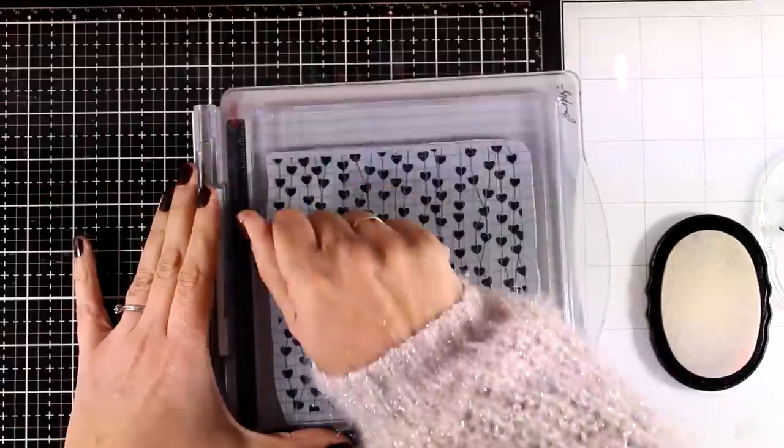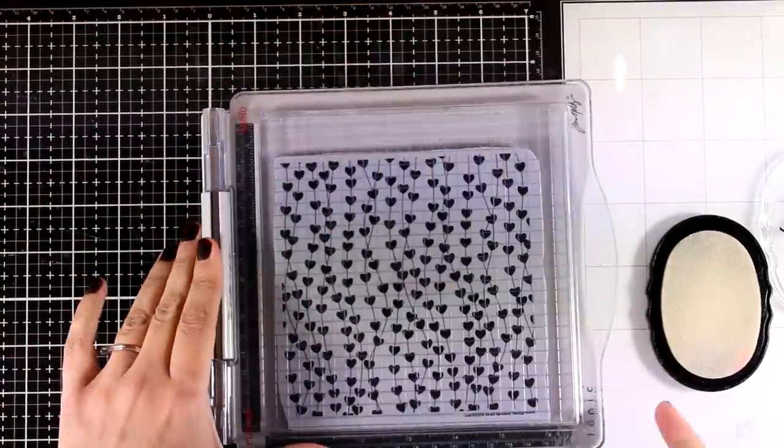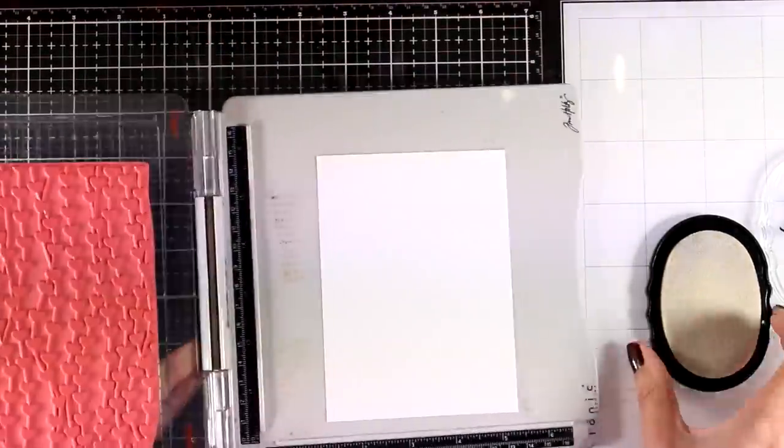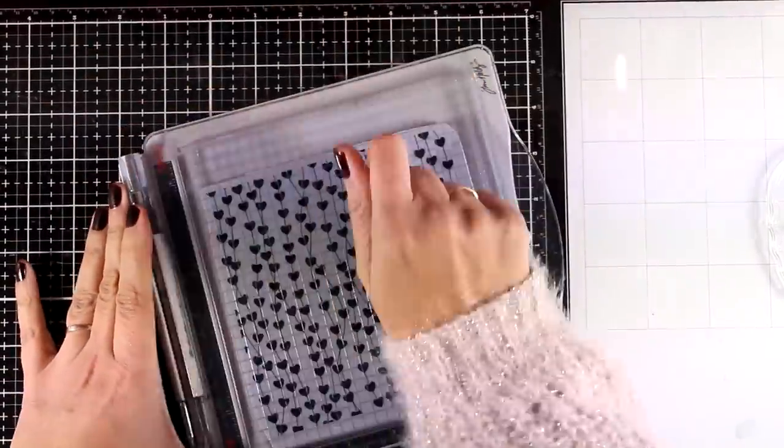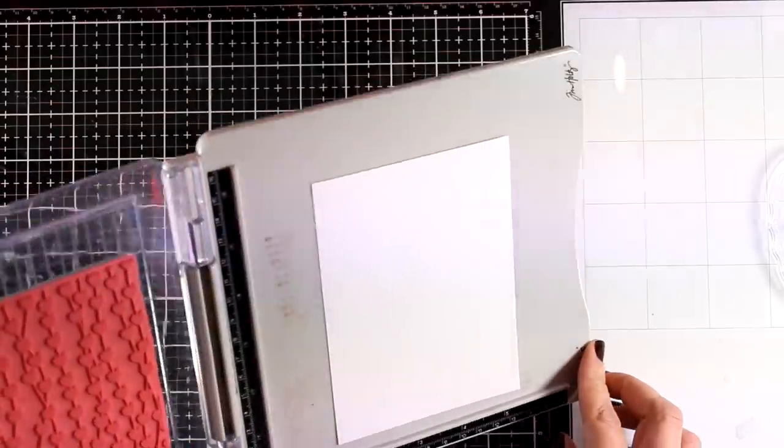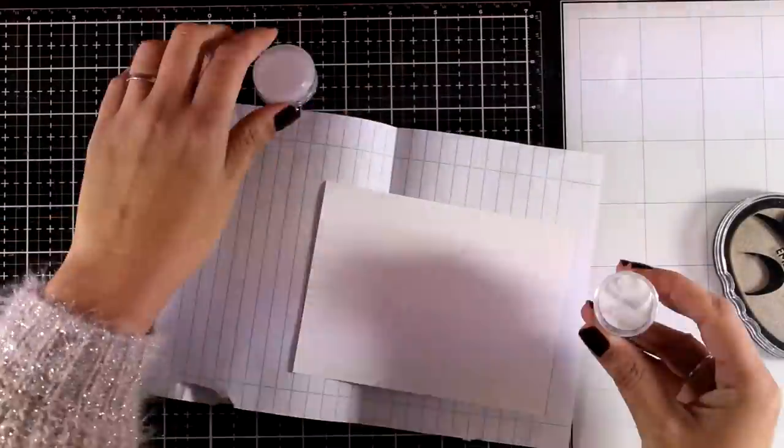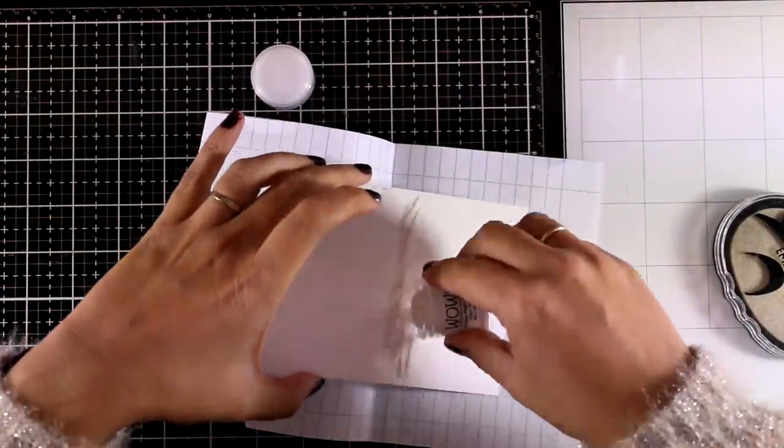Now for stamping today I'm using my stamping platform by Tim Holtz and I'm going to stamp it a couple of times just to make sure that I have everything nicely stamped and I get a good impression. If you tilt the paper you will be able to see the shine and make sure that everything is nicely stamped.